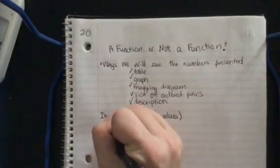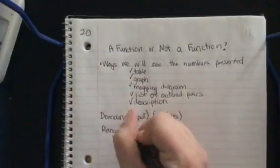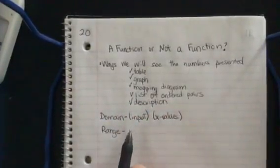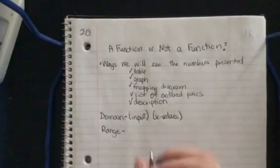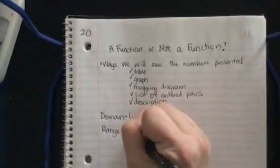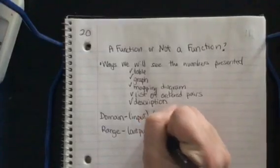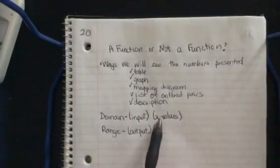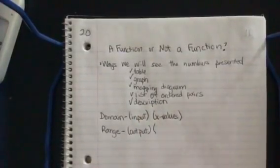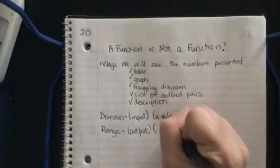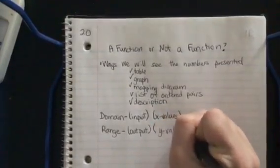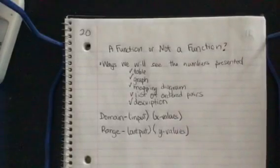Our range, if our domain is the input, what do you think the range is? Output. If our domain are our x-values, what do you think the range are? Y-values. Very good. So we're just putting some vocabulary words to things we already know.